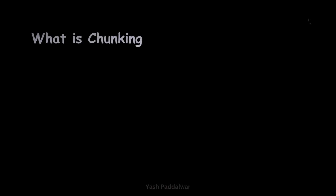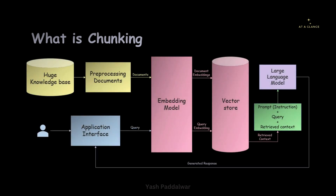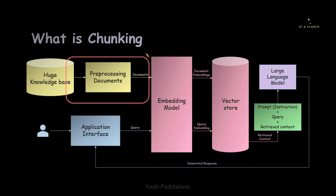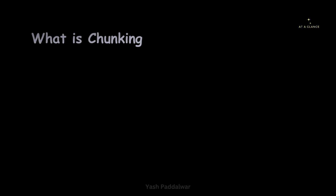So let's have an overview of what exactly chunking is. If you remember, we had seen this RAG pipeline. Now in this particular pipeline, we had seen we have a huge knowledge base and from that knowledge base, whatever is the data, we process it into documents. So specifically this chunking process is related to this particular section of processing, or dividing the data into a set of documents. So without any further delay, let's move on to the definition of chunking.